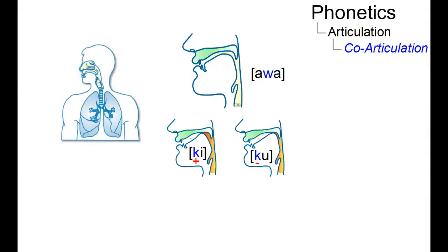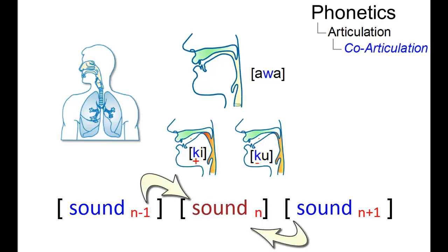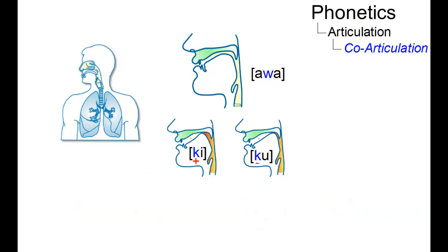Co-articulation refers to a situation in which a conceptually isolated speech sound is influenced by a preceding or following speech sound. There are two main types of co-articulation.